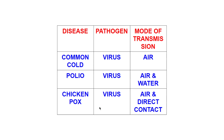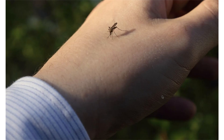First, we are going to study diseases due to viruses — three viral diseases in human beings. The first is common cold, also called influenza, which involves sneezing. Its mode of transmission is air, so if somebody has a cold they should stay away from healthy people. Another viral disease is polio, which spreads through air and water. Then we have chickenpox, a viral disease that spreads through air and direct contact. All three viral diseases have air transmission in common.